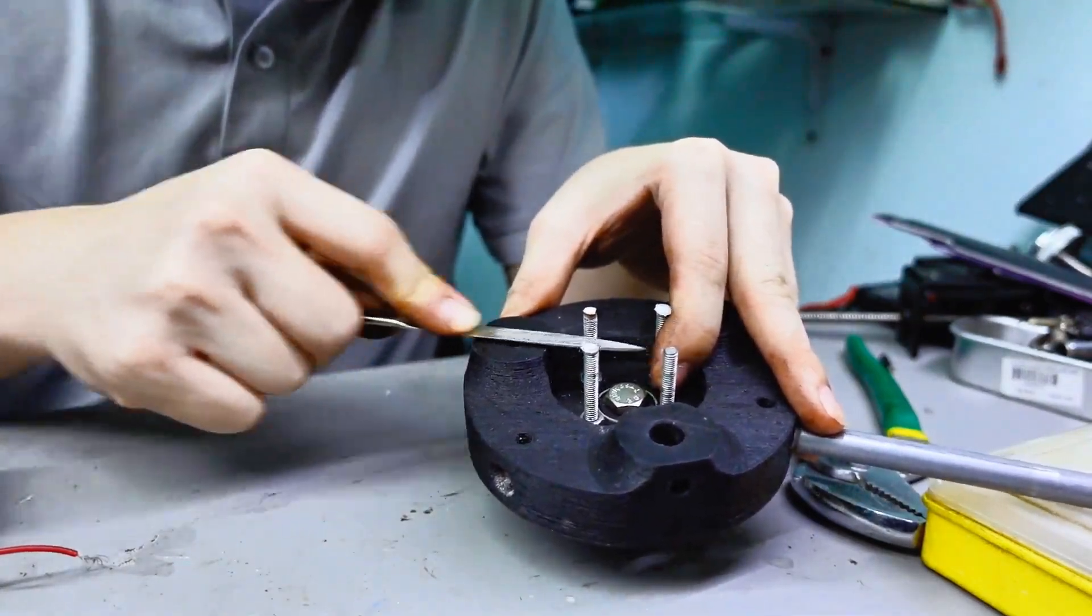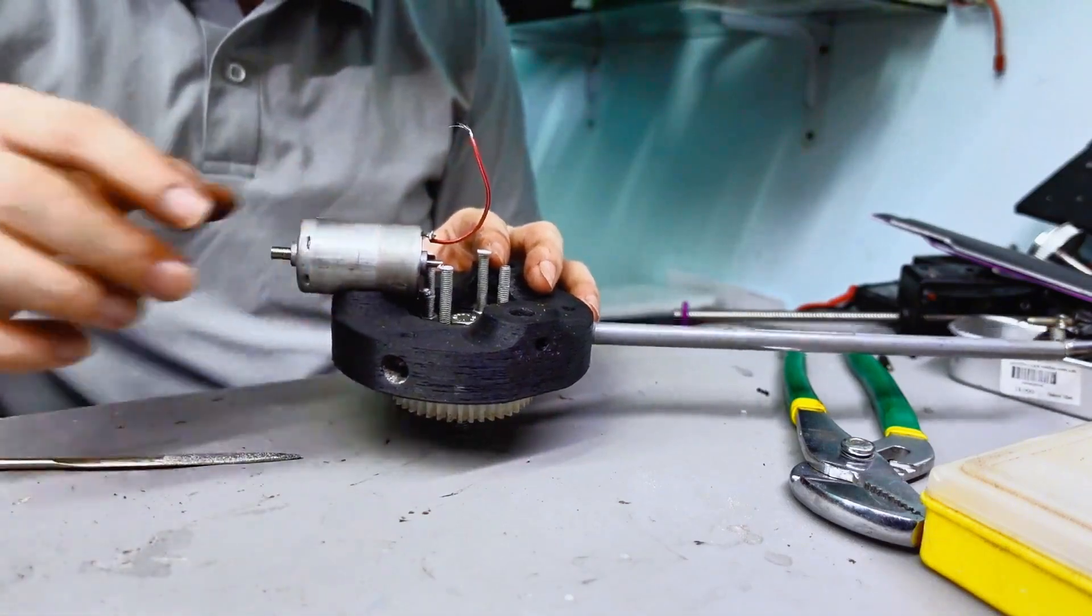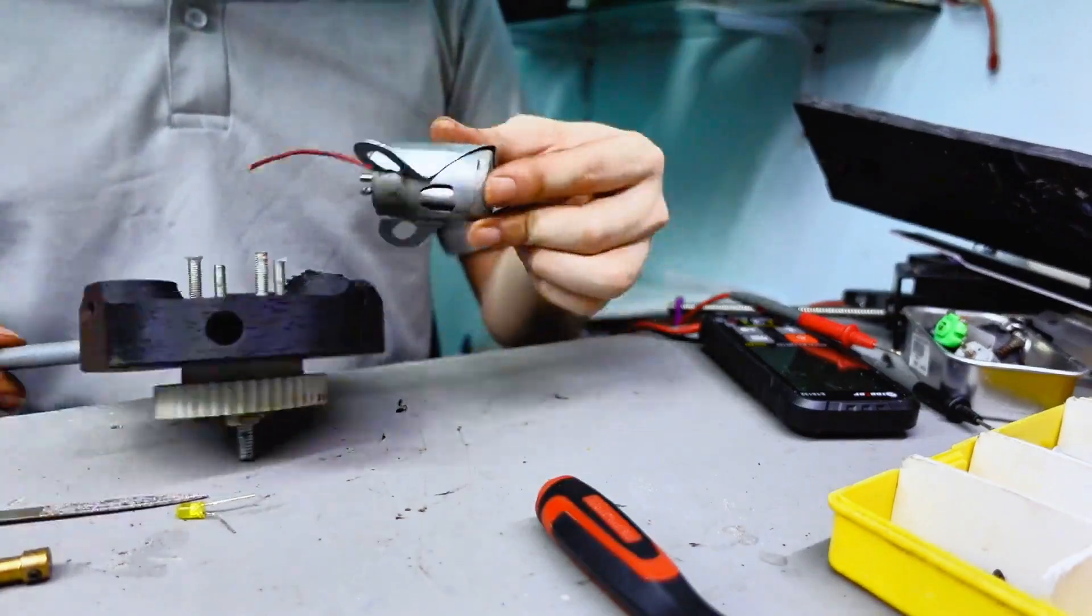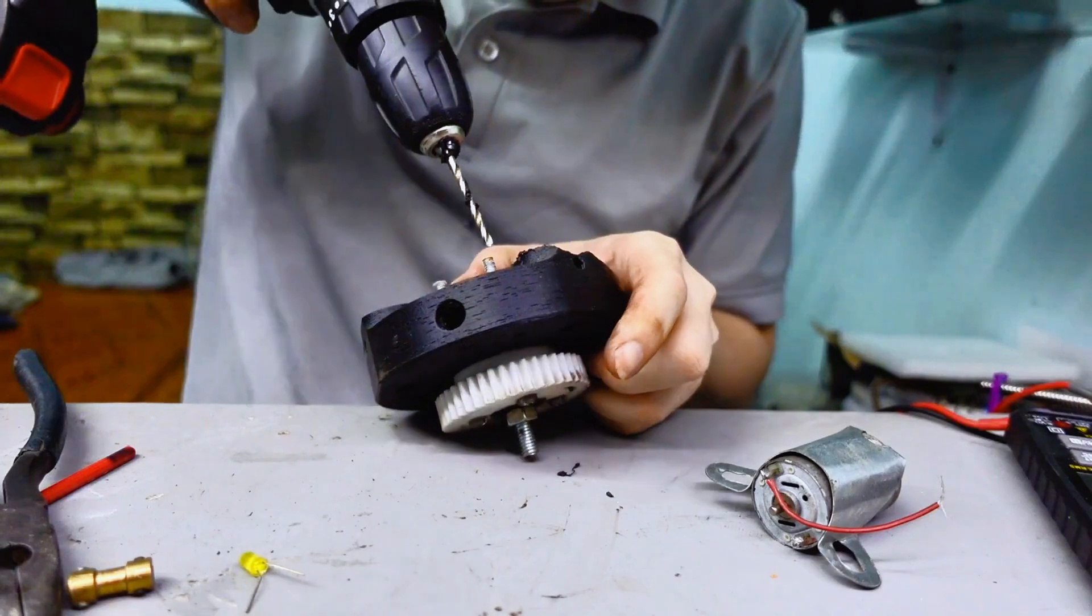I'll be using two 24V motors to generate electricity and power some LED lights. Look at this, guys! Just a light spin is enough to make the LED light up. I'll be using two motors like this, connected in parallel, to increase the overall power output.